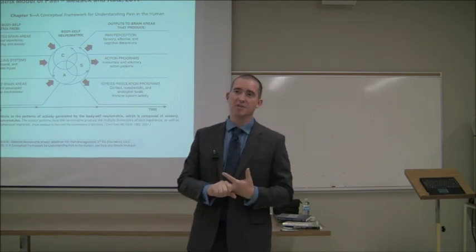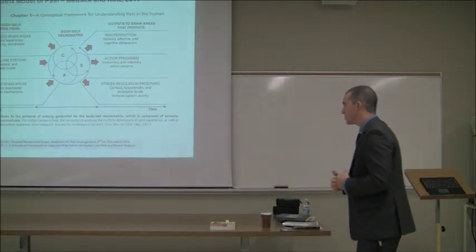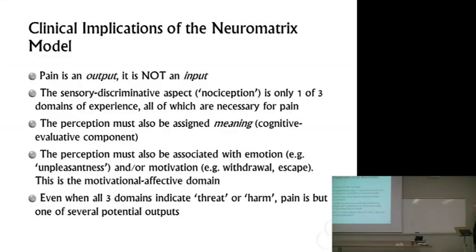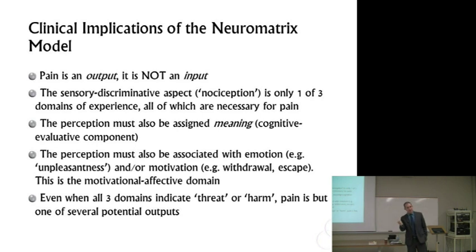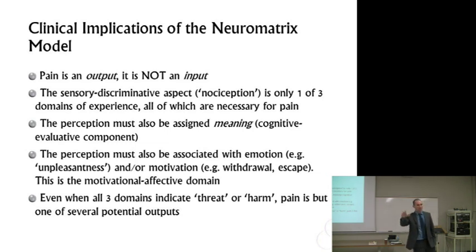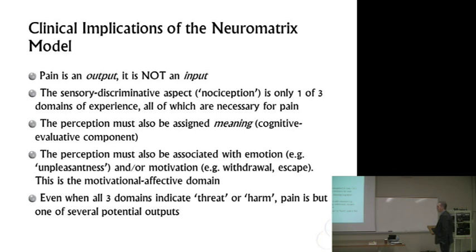What this also means is that when we're trying to comprehensively assess somebody in pain, it's worth our while to do some kind of assessment that taps into all three of these different domains — and that's what we're going to do today. Pain is an output, not an input. I hope after today I never hear anybody say 'pain receptors' or 'the pain signal travels to the brain.' Nociception may be what's traveling to the brain — pain is the output. The sensory discriminative aspect is only one of three domains, all of which are necessary. The perception must be assigned meaning and associated with emotion or motivation. Only when all three indicate threat or harm is pain one possible experience.